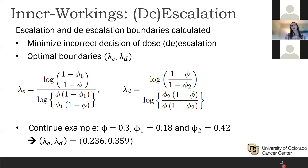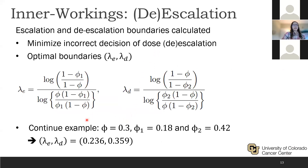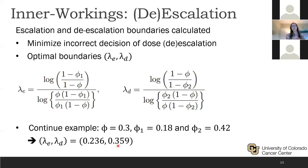With sample size information, safety information, and the target DLT, we now find the escalation and de-escalation boundaries. The idea is to minimize incorrect decisions of dose escalation and de-escalation. We plug in the target DLT and our boundaries into formulas to get the optimal boundaries. For example, if less than 23.6% of participants have observed a DLT at a given dose, we escalate the next cohort. If above 35.9%, the next cohort is de-escalated. If within these bounds, the next cohort continues at the same dose.